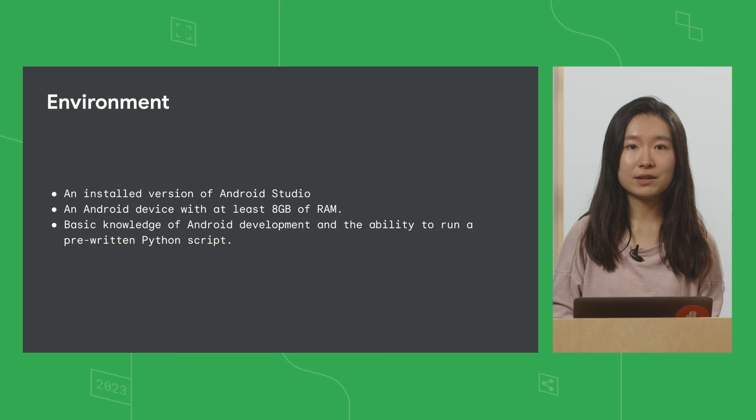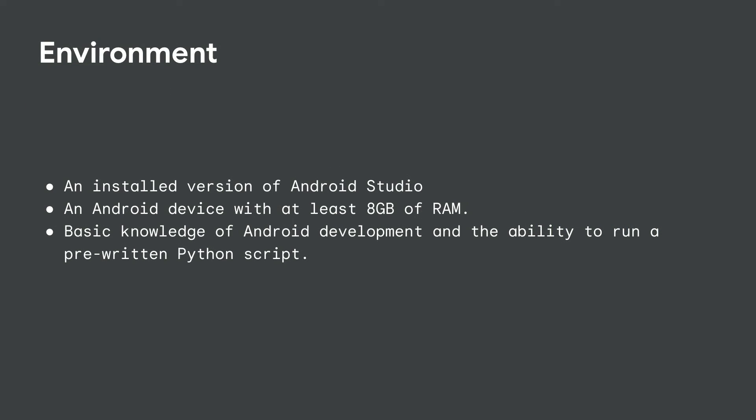Here we'll walk through the codelab and its prerequisites. First, you will need to install Android Studio — this tutorial was written and tested with the Android Studio Giraffe version. Next, if you want to run the application on an actual mobile device rather than a simulator, we recommend using an Android device with at least 8GB of RAM, because Gen AI models are computationally intensive. Also, some basic knowledge of Android development will be very helpful to follow through this tutorial.